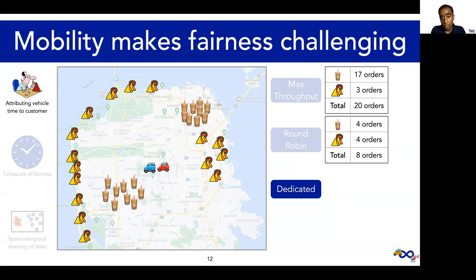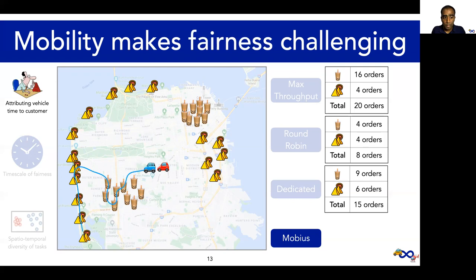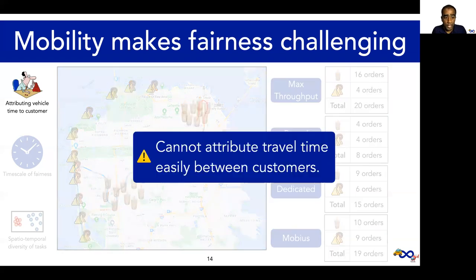Another approach is to dedicate a vehicle to each restaurant. This would give each restaurant equal vehicle time, but it misses out on any incentive to share vehicles across customers. For instance, the platform could have gotten higher throughput if the red vehicle were allowed to pick up some samosa orders on the way to the cluster of boba orders, since this would have freed up some time on the blue vehicle. What we want is something more like this. Notice that the throughput is split roughly equally amongst customers. At the same time, the total throughput is similar to the max throughput algorithm. A key takeaway from these examples is that when we decide to share a vehicle amongst multiple customers, it becomes really hard to attribute vehicle time to customers, and therefore reason about fairness.